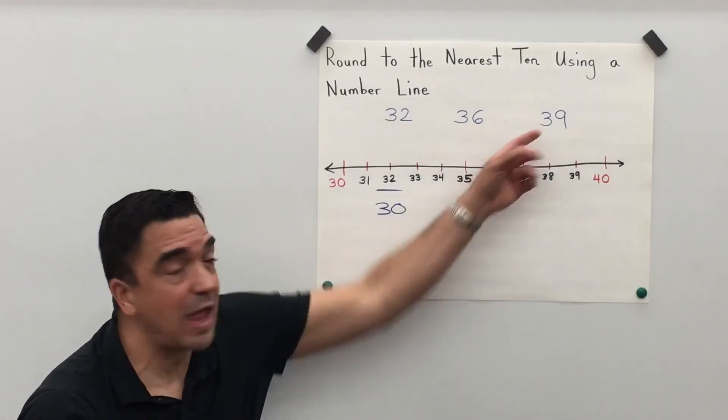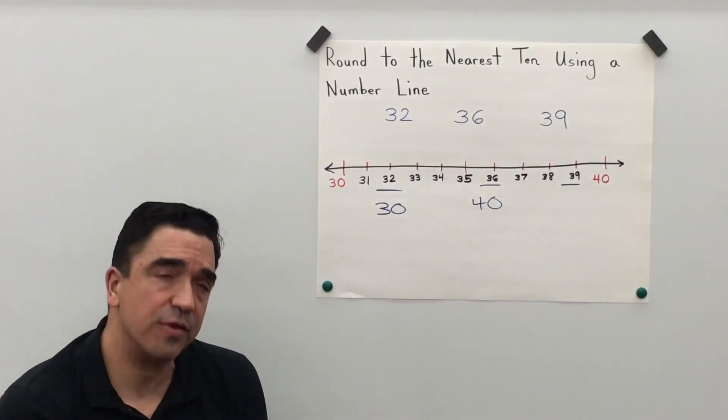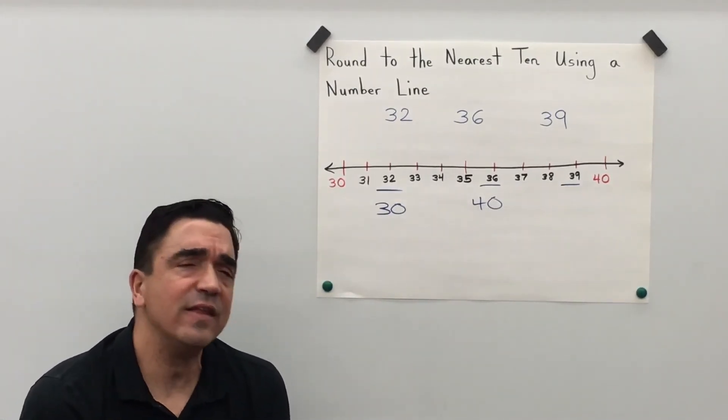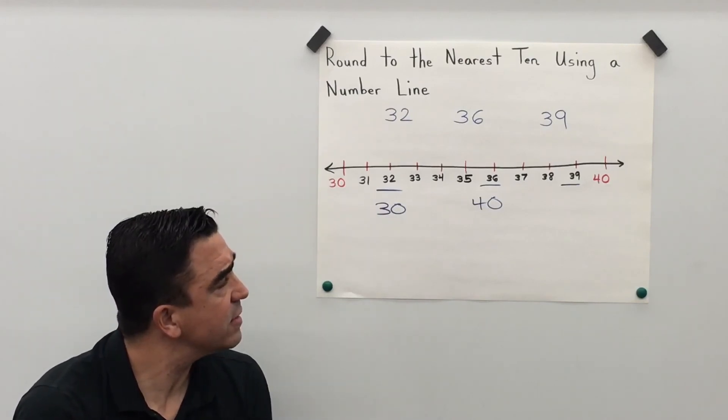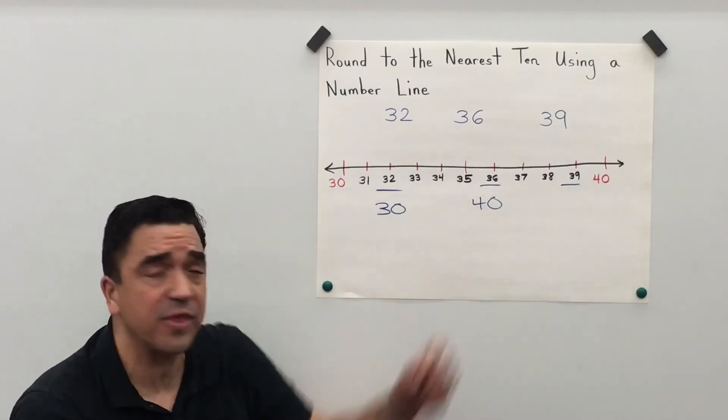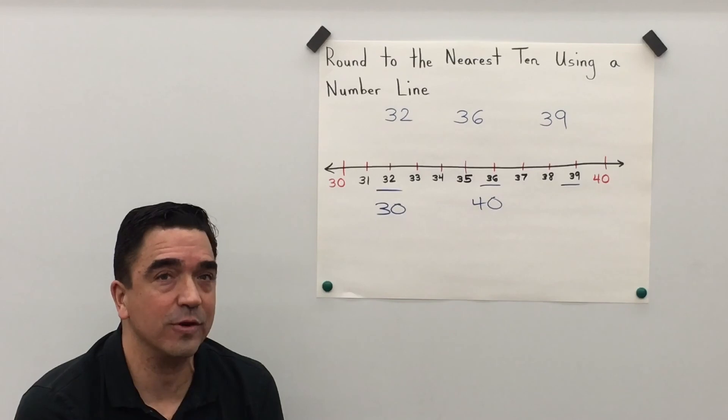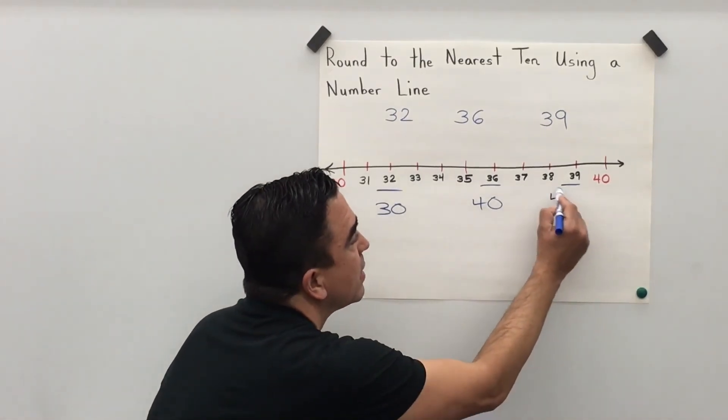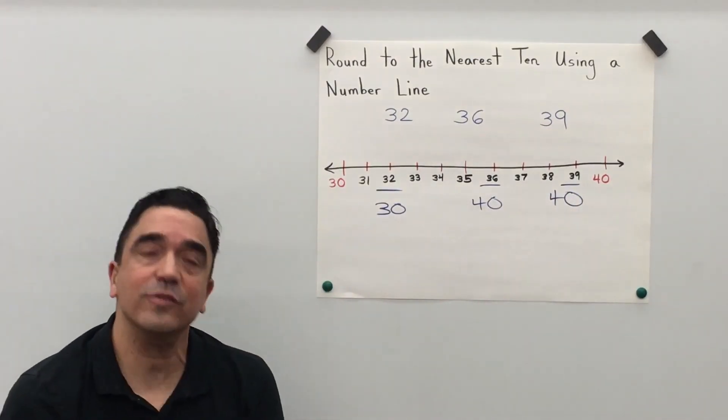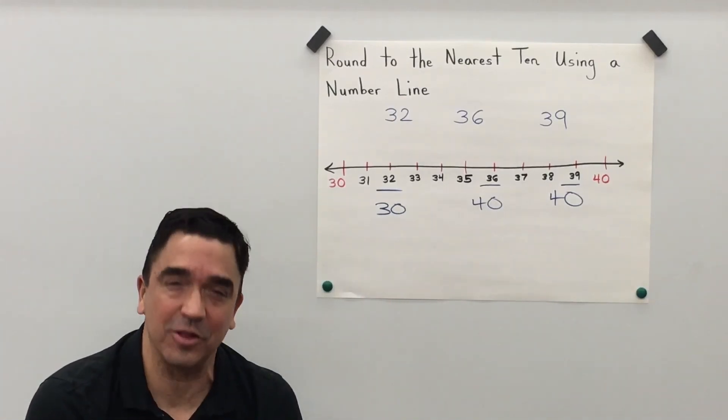Let's look at our last number, 39. Let's think about this. The number 9 is in the ones place, and that is going to tell the 3 to go up. Therefore 39 is closer to 40. And that concludes our lesson.